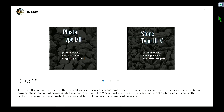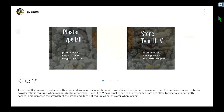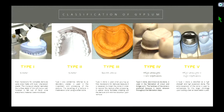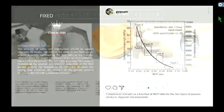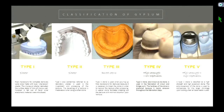This is just a summary of type 1 through 5 stone. Really, just think of types 1 through 5 in terms of compressive strength — things get harder as you go up.